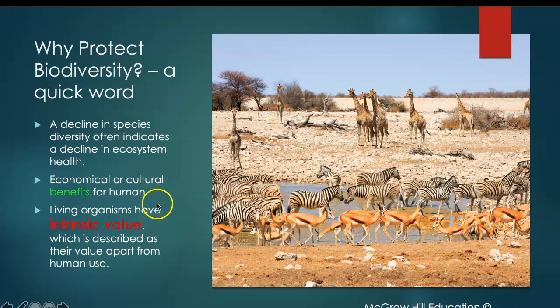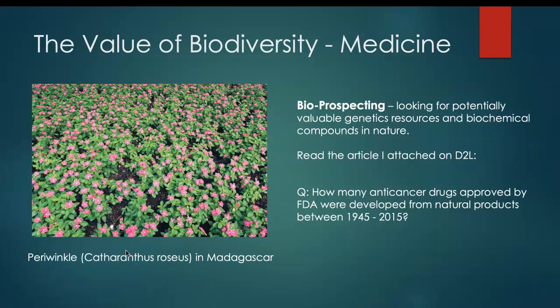We cannot live without our ecosystems. The third thing I want to introduce is intrinsic value — the value of living organisms apart from human use. This is a biocentric or ecocentric view: we see things as having value apart from our application of them. It's not that if something isn't useful to us, it has no value.